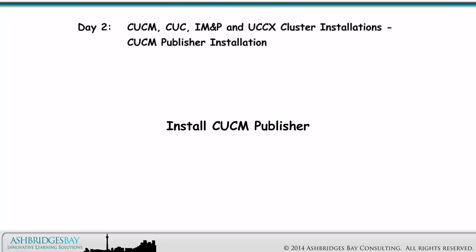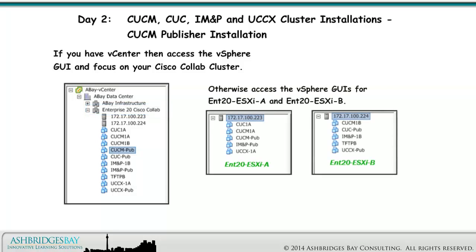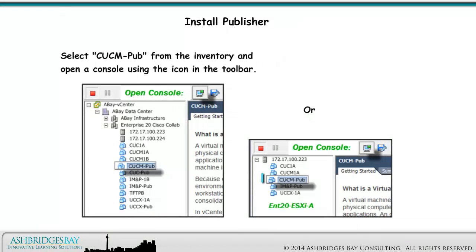The publisher must be installed first. If you have vCenter, access the vSphere GUI and focus on your Cisco Collab cluster. Otherwise, access the vSphere GUIs for Enterprise 20 ESXi-A and Enterprise 20 ESXi-B. We'll leave the GUIs open during the whole of the cluster installations process. Select CUCM Pub from the inventory and open a console using the icon in the toolbar.